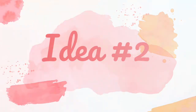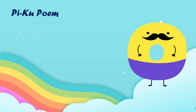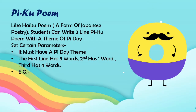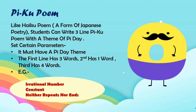Idea 2: Pi-iku Poem. Like a Haiku poem, students can write a three-line Pi-iku poem with a theme of Pi Day. Set certain parameters: it must have a Pi Day theme, the first line has three words, the second one has one word, and the third has four words. Example: "Irrational number constant — neither repeats nor ends."